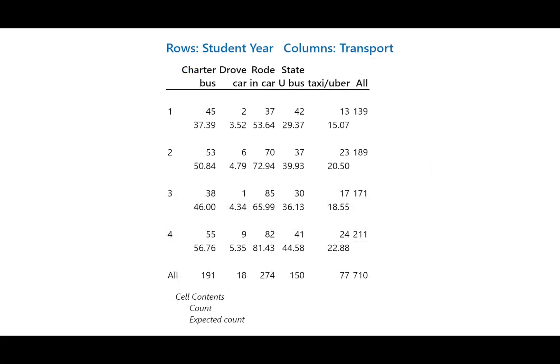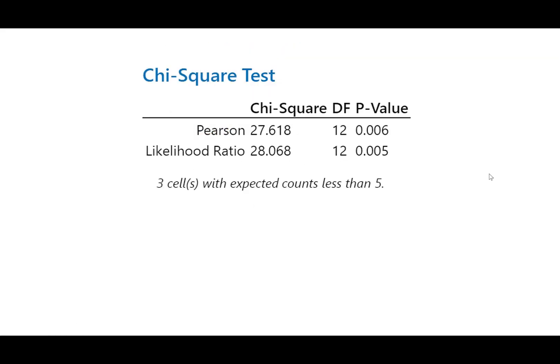Back from Minitab — just like we calculated by hand, the expected number of first years who took a charter bus is 37.39, with the actual value being 45. Each group shows both the actual value and the expected value. Our chi-square statistic p-value of 0.006 is statistically significant by almost any measure — there is a different distribution by year of what kind of transit people take to get to this race. But note: three cells have expected counts less than five, which is an important assumption in chi-square that expected cell counts must be greater than five.